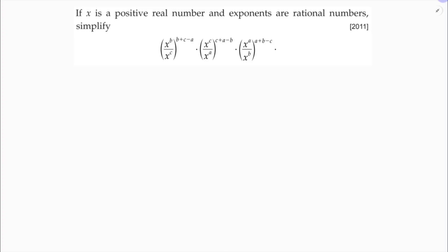This is a positive real number and exponents are rational numbers. Simplify x power b by x power c, whole power b plus c minus a, into x power c by x power a, whole power c plus a minus b, into x power a by x power b, whole power a plus b minus c.